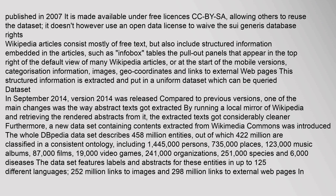Wikipedia articles consist mostly of free text, but also include structured information embedded in the articles, such as Infobox tables — the pull-out panels that appear in the top right of the default view of many Wikipedia articles, or at the start of the mobile versions — as well as categorization information, images, geo-coordinates, and links to external web pages. This structured information is extracted and put in a uniform dataset which can be queried.